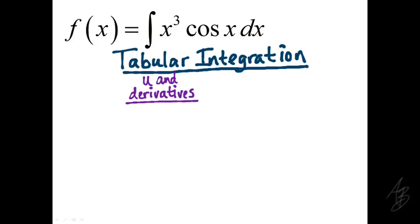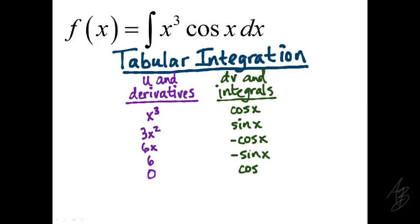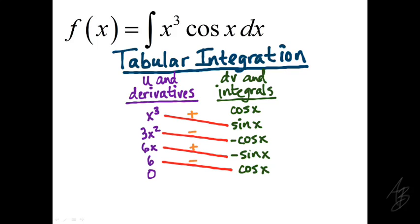To use tabular integration, we choose u equal x cubed and differentiate repeatedly until we reach zero: 3x squared, 6x, 6, and 0. Then we choose dv equal to cosine of x and integrate the same number of times: sine of x, negative cosine of x, negative sine of x, and cosine of x. We want u to eventually reduce to zero and dv to not grow more complex. Then we just match them up and alternate signs starting with positive.